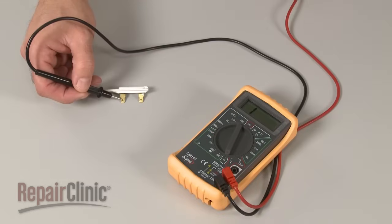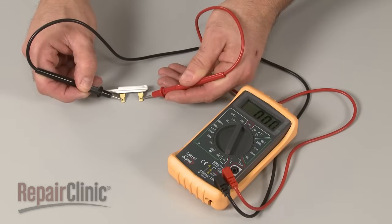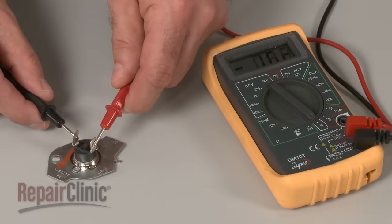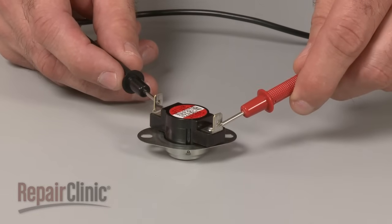If the dryer does not heat, or heats inadequately, all of these components can and should be tested individually to determine if one of them has stopped functioning.